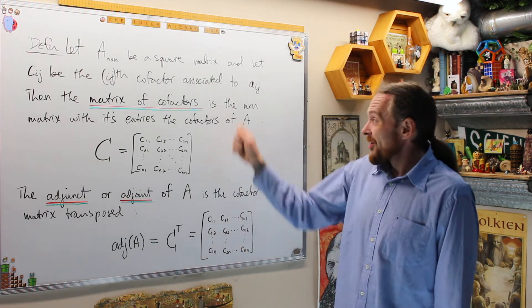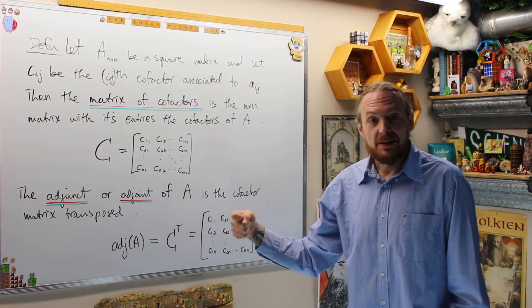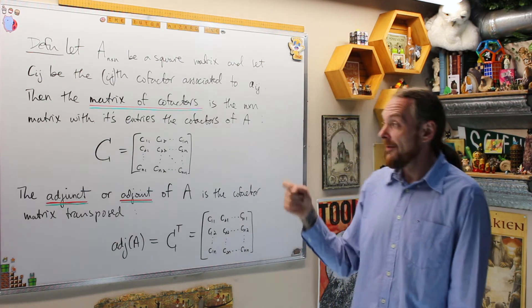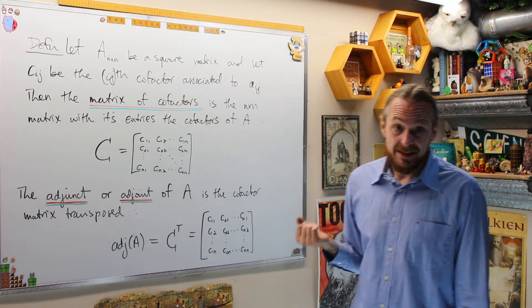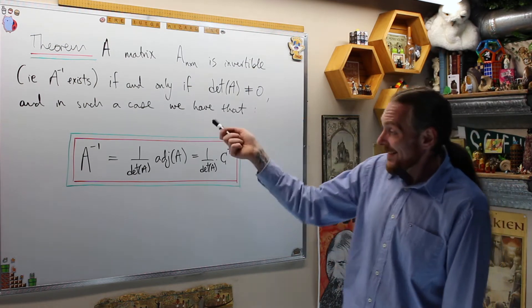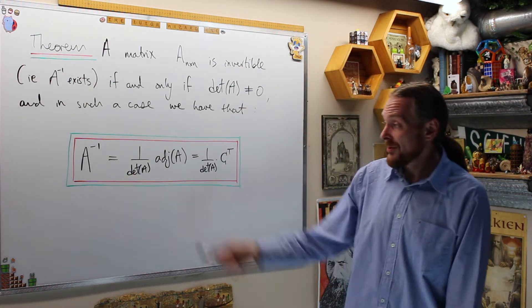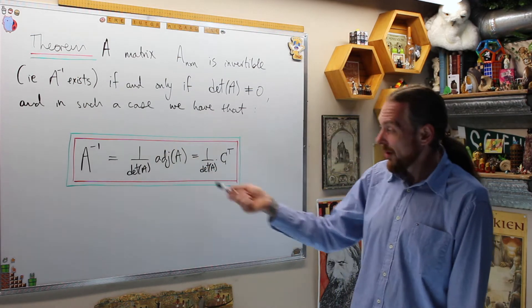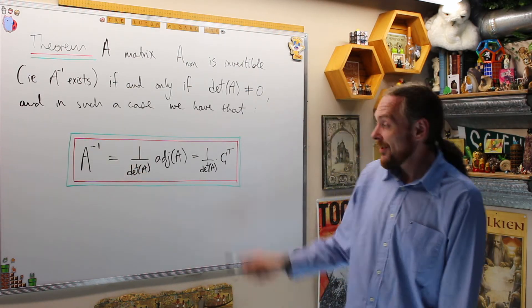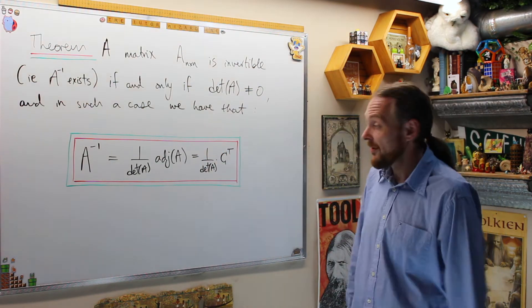It turns out that if you multiply the original matrix A by this thing, then scalar multiply by 1 over the determinant, you get the identity. That means this thing times 1 over the determinant is the inverse matrix of the n by n matrix, if it exists. Theorem: an n by n matrix A is invertible if and only if its determinant is non-zero. In such a case, we have an explicit formula: the inverse is 1 over the determinant times the adjoint matrix — which just means matrix of cofactors transposed.